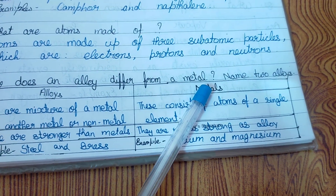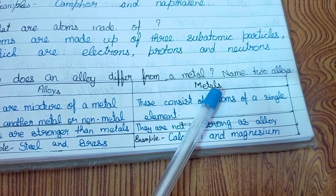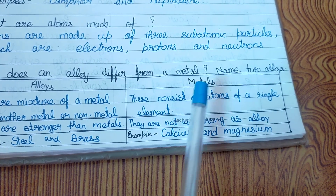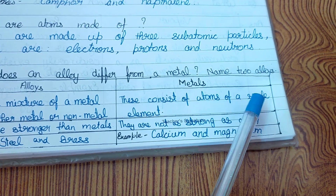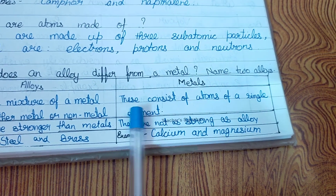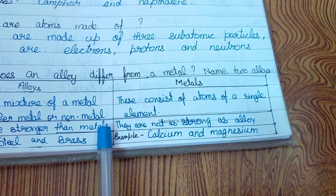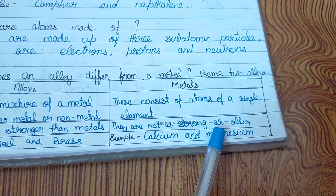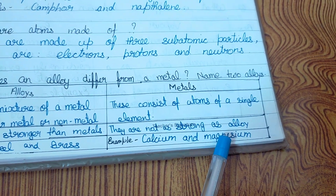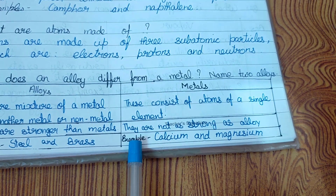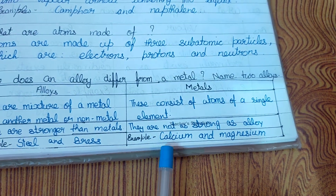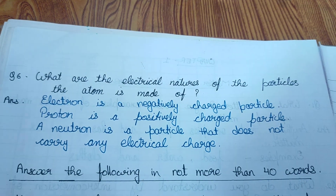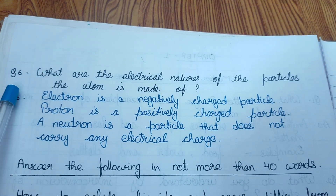Second part — metal: these consist of atoms of a single element; they are not as strong as alloys. Example: calcium and magnesium.